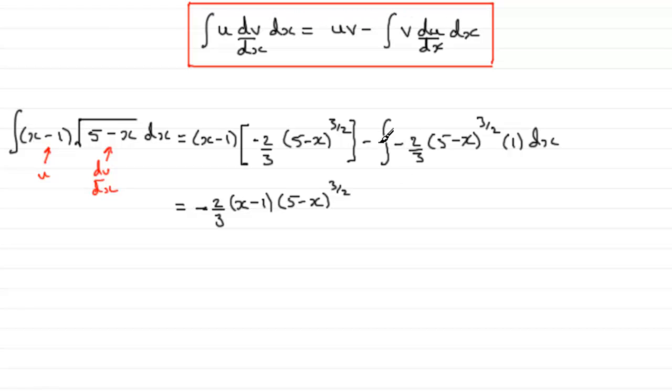And then as for this term, I would want to replace this with a plus, pull the constant out to the front of the integral, always a good habit to get into, and then write in the 5 minus x to the power 3 over 2. And we're integrating with respect to x.